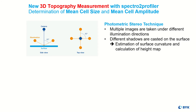To measure 3D topography, the instrument takes multiple images under different illumination directions. Different shadows are cast on the surface, which allows estimation of surface curvature and calculation of a height map.